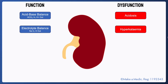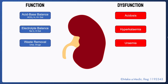The kidneys are also responsible for removing various waste products from the body. This includes endogenous waste products such as urea and various drugs. A loss of this capability can result in uraemic complications such as pericarditis and encephalopathy.